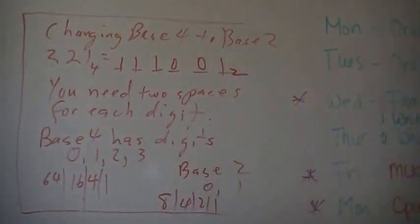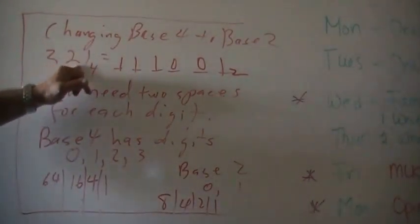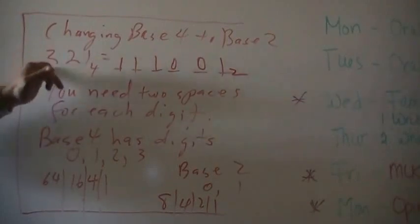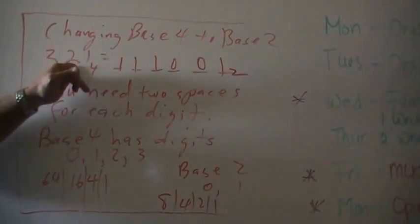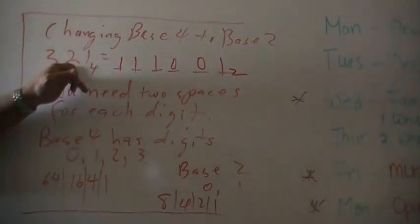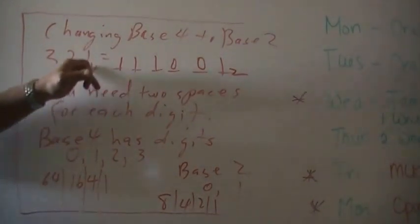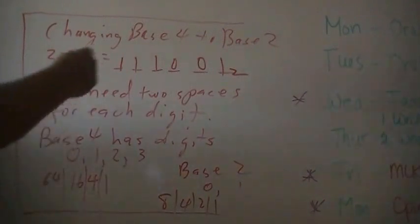And if you wanted to check it, in base 4, you have the 1s, the 4s, and the 16s. 3 times 16 is 48, and 8 is 56, 57. So this should be 57 over here.